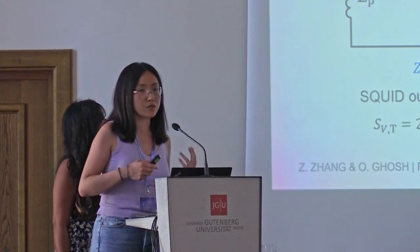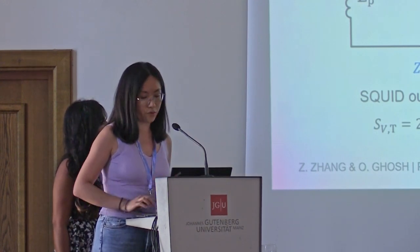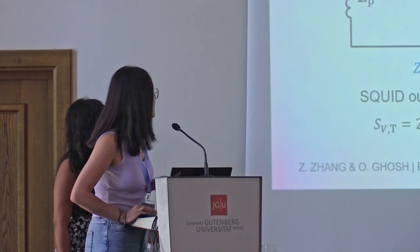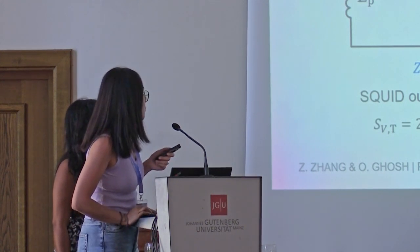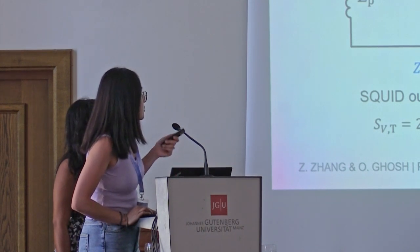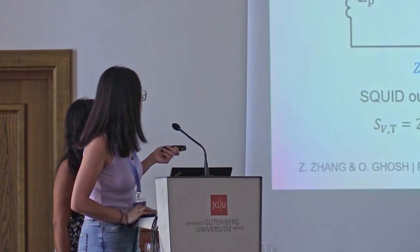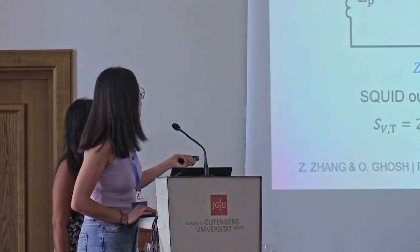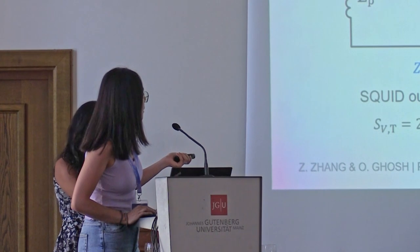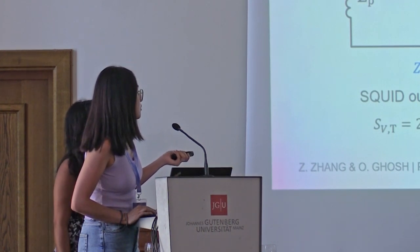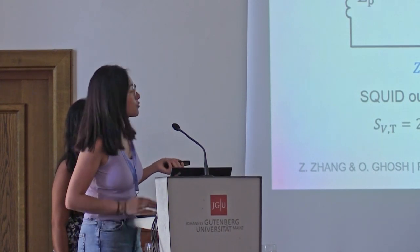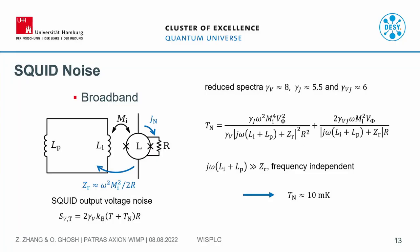I want to talk about the noise. A SQUID's noise is well studied, but when you couple it with an input circuit, it becomes more complicated. The SQUID has two sources of noise: voltage noise and current noise circulating in the superconducting ring. Normally the voltage noise is represented by the Boltzmann constant, the operation temperature, and the resistance of the Josephson junction. With the input circuit, there is an additional noise temperature contribution. The calculated noise temperature is about 10 millikelvin, which is negligible compared to the operation temperature.